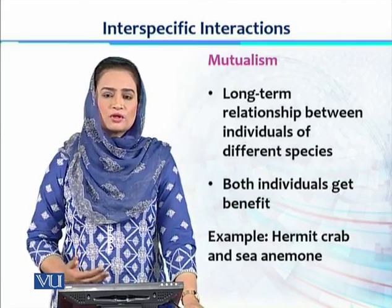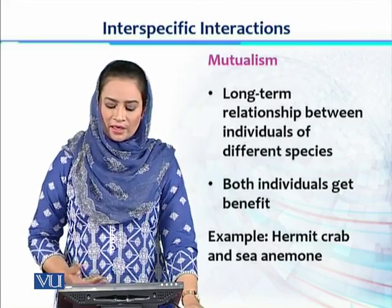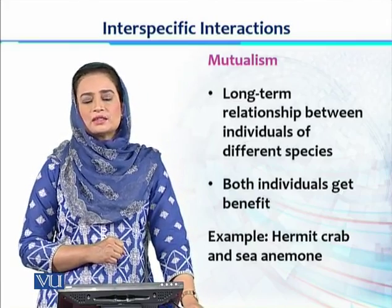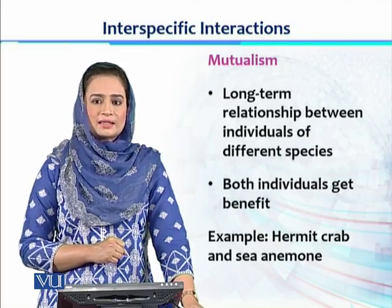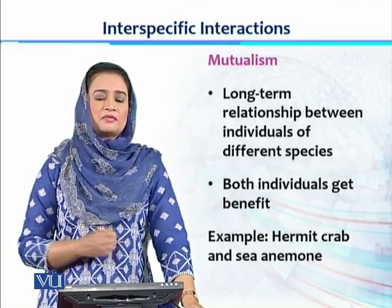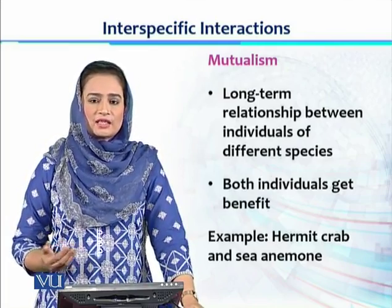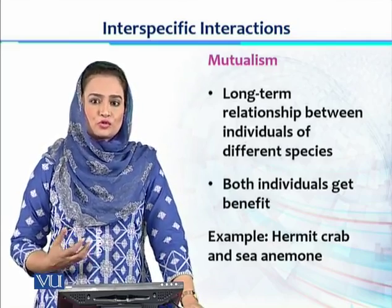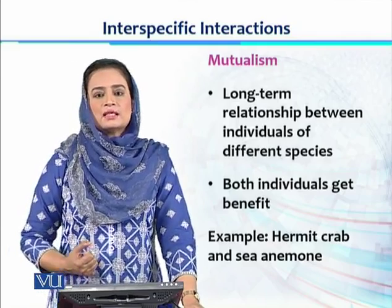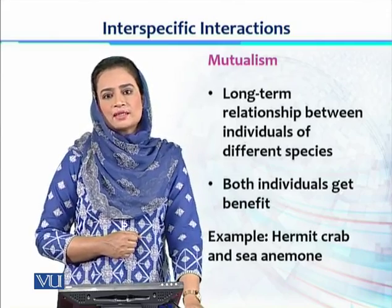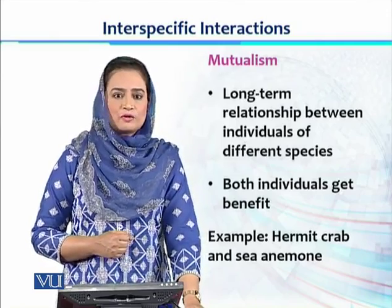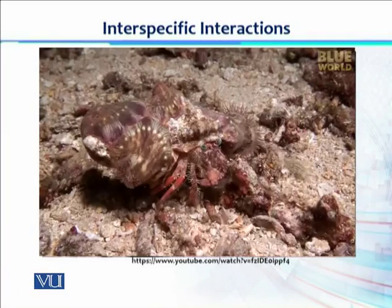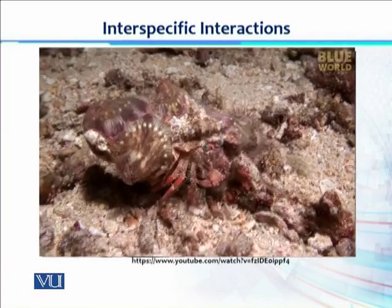In mutualism, both symbionts could be obligate or facultative. One example of mutualistic behavior is the hermit crab and sea anemone — marine animals where the hermit crab carries the sea anemone, giving it a free ride since it is sedentary and cannot move on its own. Moving with the hermit crab provides more opportunities to get food, while in return the sea anemone protects the hermit crab from predators using its stinging tentacles.